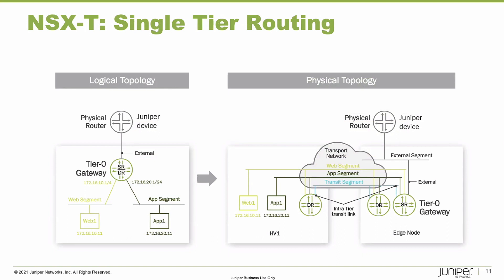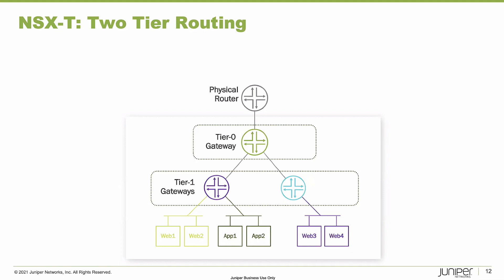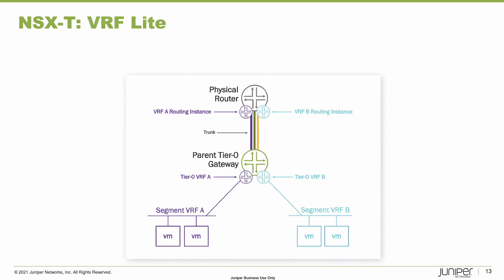With those connectivity templates we can support the various designs recommended by VMware — the standard single-tier routing as well as two-tier routing with both tier zero and tier one gateways, and VRF lite, which is a common process to plumb a whole bunch of VLANs with dedicated routing for them.